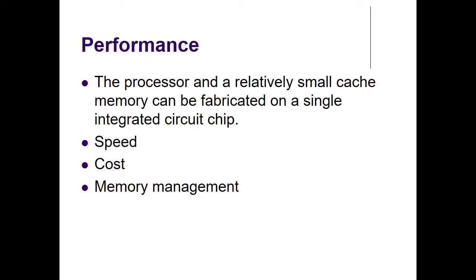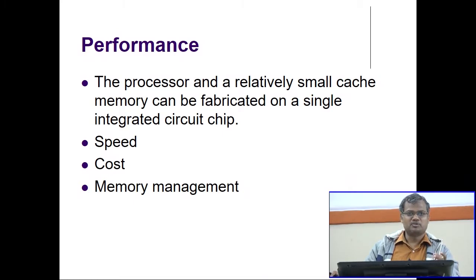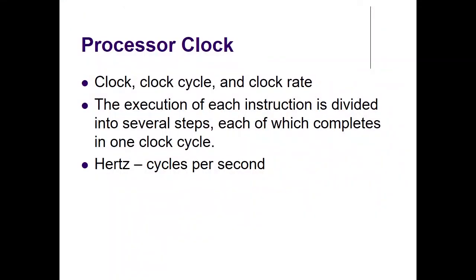A processor and a relatively small cache memory can be fabricated on a single chip to improve performance. We will study in more detail how much cache memory is sufficient for running a program faster. There are different issues: speed of the cache, cost, and memory management — which data should be available in cache versus main memory, and so on. Now, there is one related term: the processor clock, clock cycle, and clock rate.